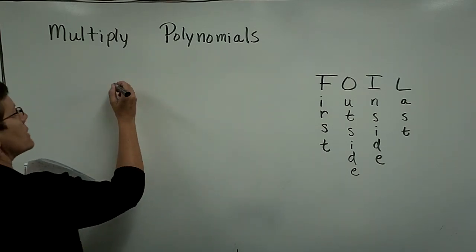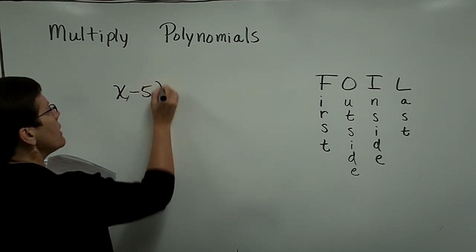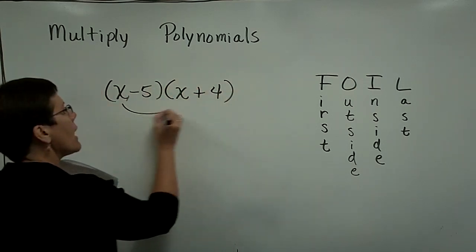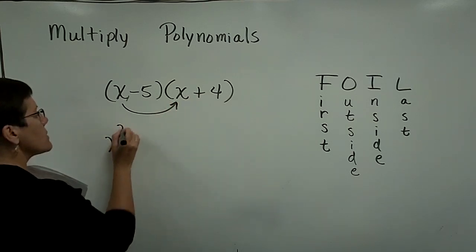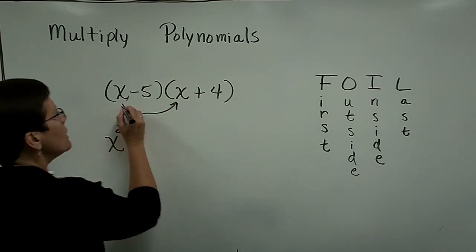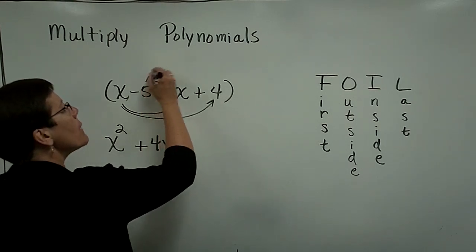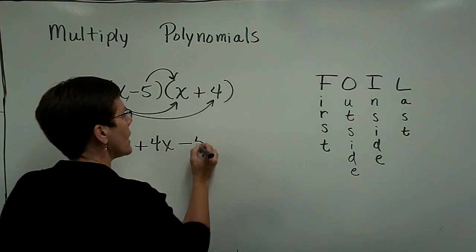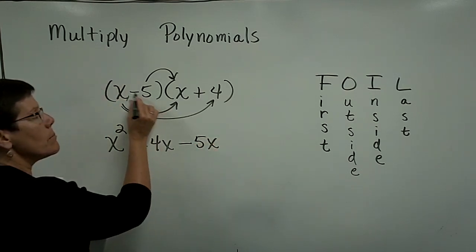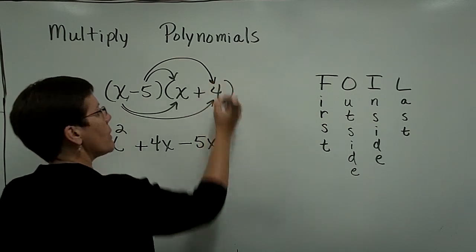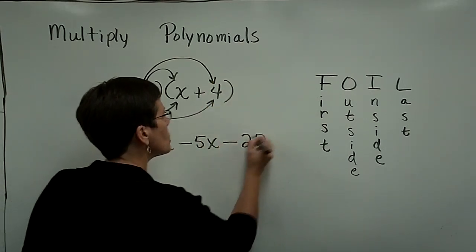So if I ask you to multiply x minus 5 times x plus 4, x times x is x squared. x times a positive 4 is a positive 4x. A minus 5 times x is a minus 5x. This is a minus 5, a negative 5, plus a negative 5.